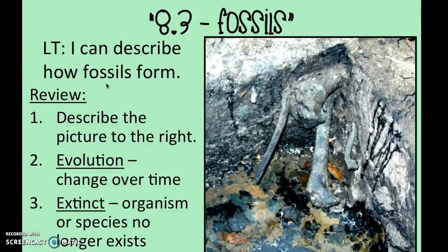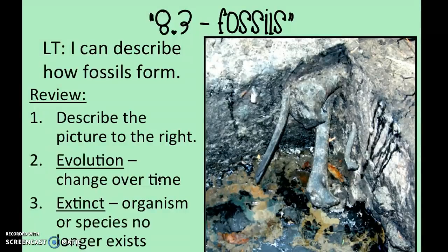Section 8.3 is about fossils — how they form and the different types. Before looking at new information, let's quickly review a couple of terms. Extinct means a specific species of organisms no longer exists, which we'll discuss throughout this chapter. Evolution literally means 'change over time.' A lot of people get confused by that word or give it a bad rap, but we'll continue discussing it through the remainder of the year.